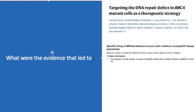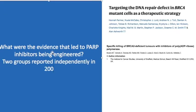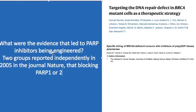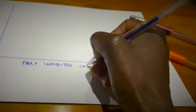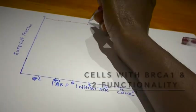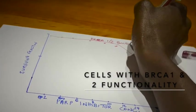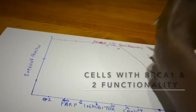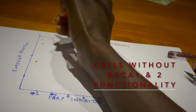What is the evidence that led to inhibitors of PARP1 and 2 being engineered? Two groups in 2005 reported in the journal Nature that when BRCA1 or BRCA2 is mutated, blocking PARP causes synthetic lethality. Farmer H. et al. and Bryant H.E. et al. showed that with increasing concentrations of PARP inhibition, cells with BRCA1 and 2 functionality tolerated PARP inhibition. But in cells without BRCA1 or 2 functionality, very low doses of PARP inhibition caused those cells to die.